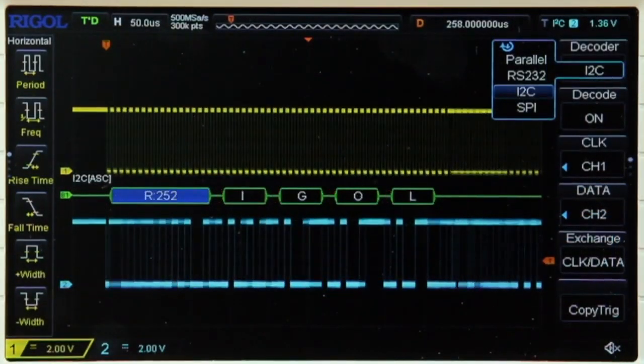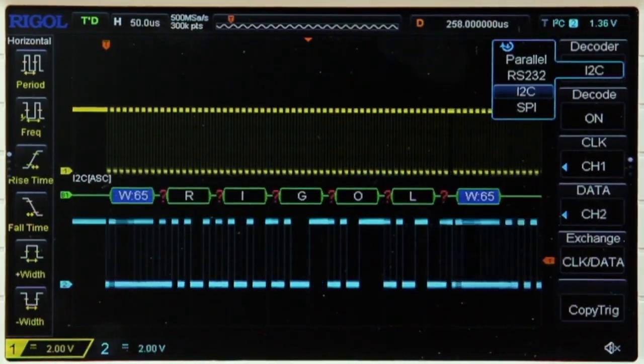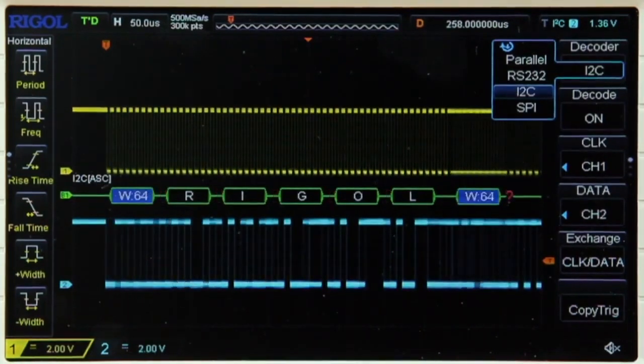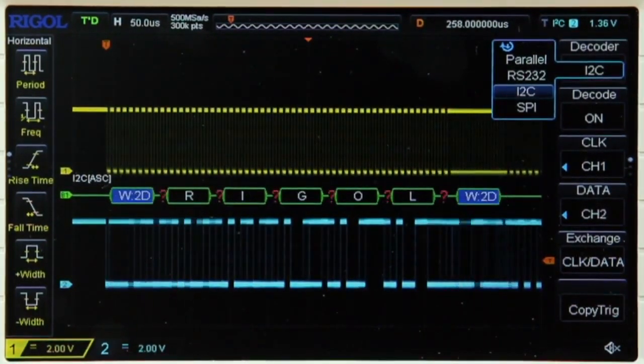The DS1202Z-E performs serial decode on RS232, I2C, and SPI signals right out of the box, allowing users to quickly and easily decode serial data.